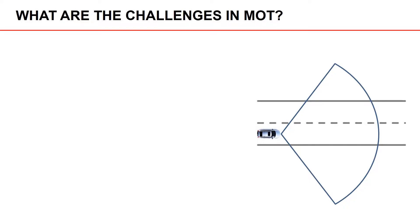Hi! In this video we're going to give an overview of the challenges that we face in multiple object tracking. We can illustrate the challenges in MOT by considering an example involving an autonomous vehicle that is driving along a road. The vehicle has a sensor with a field of view illustrated by this circle segment.